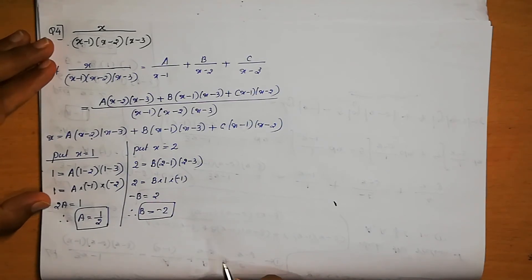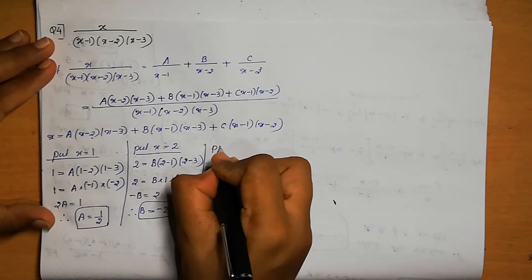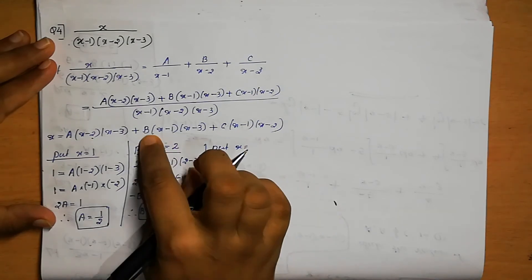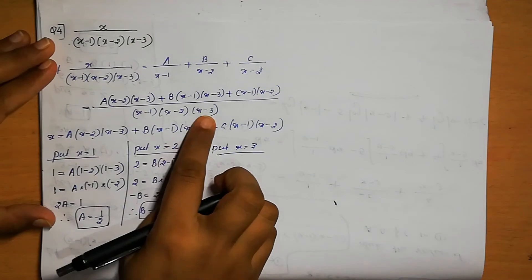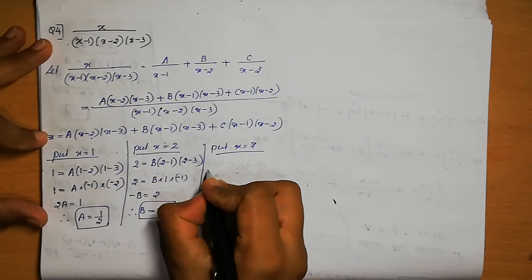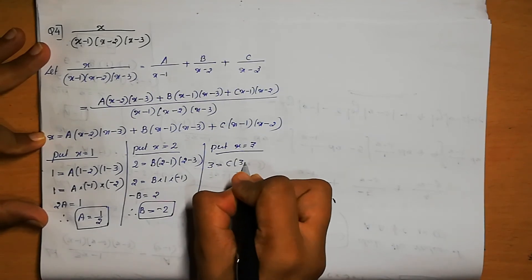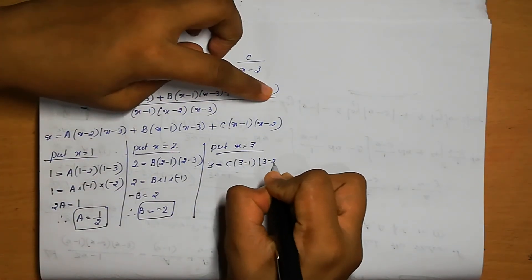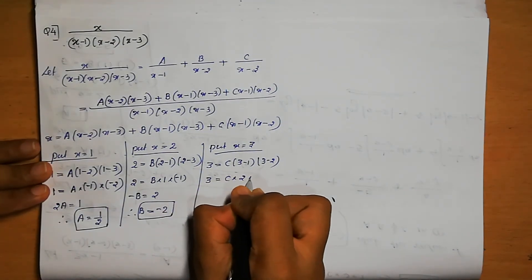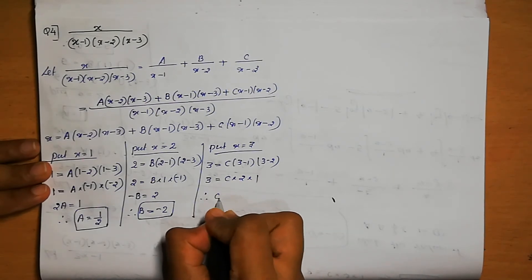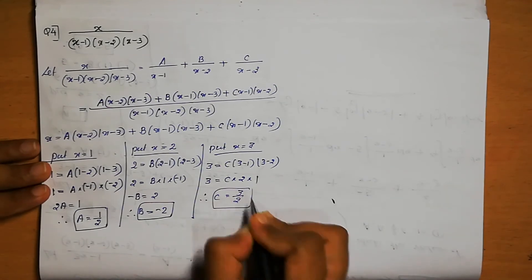Find C. Put x equals 3: 3 equals C(3 minus 1)(3 minus 2) plus 0. So, 3 equals C(2)(1) equals 2C. Therefore, C equals 3 by 2.